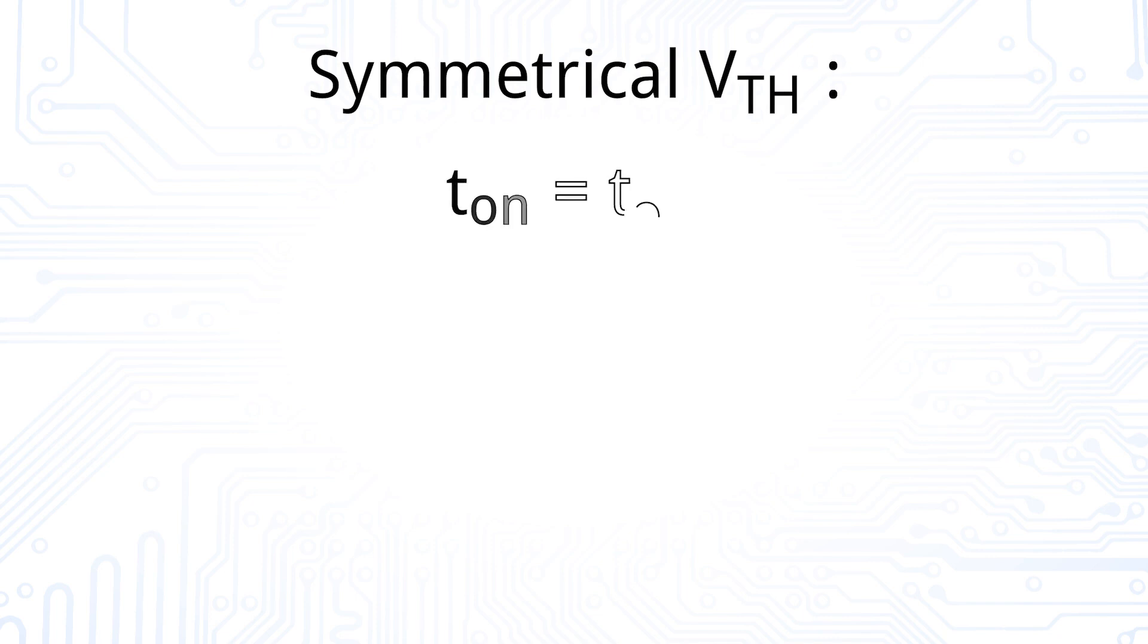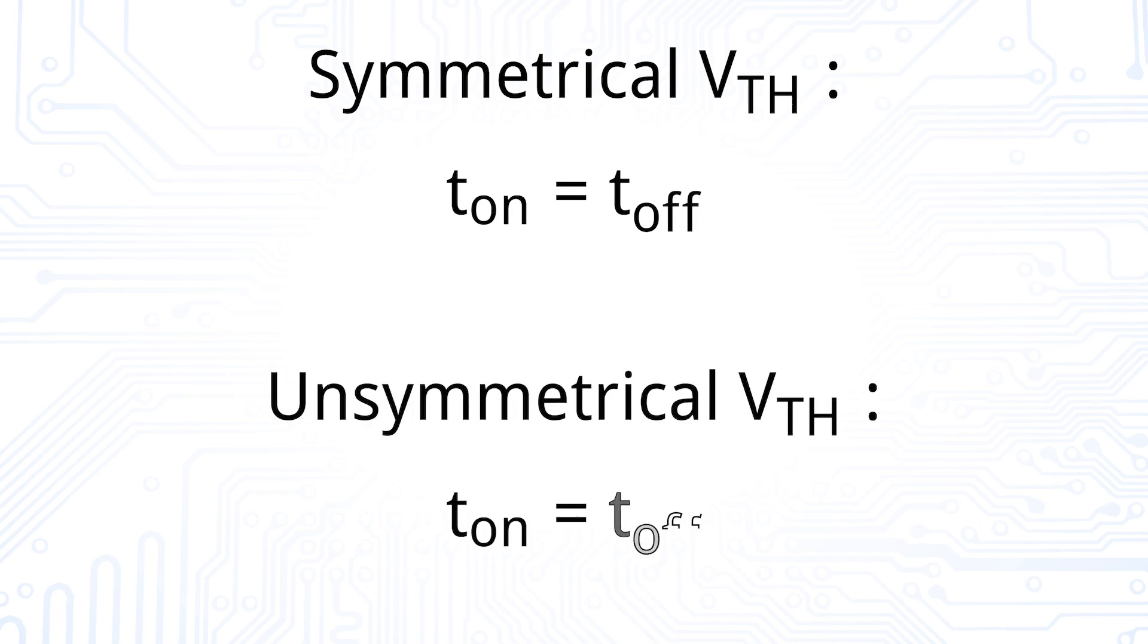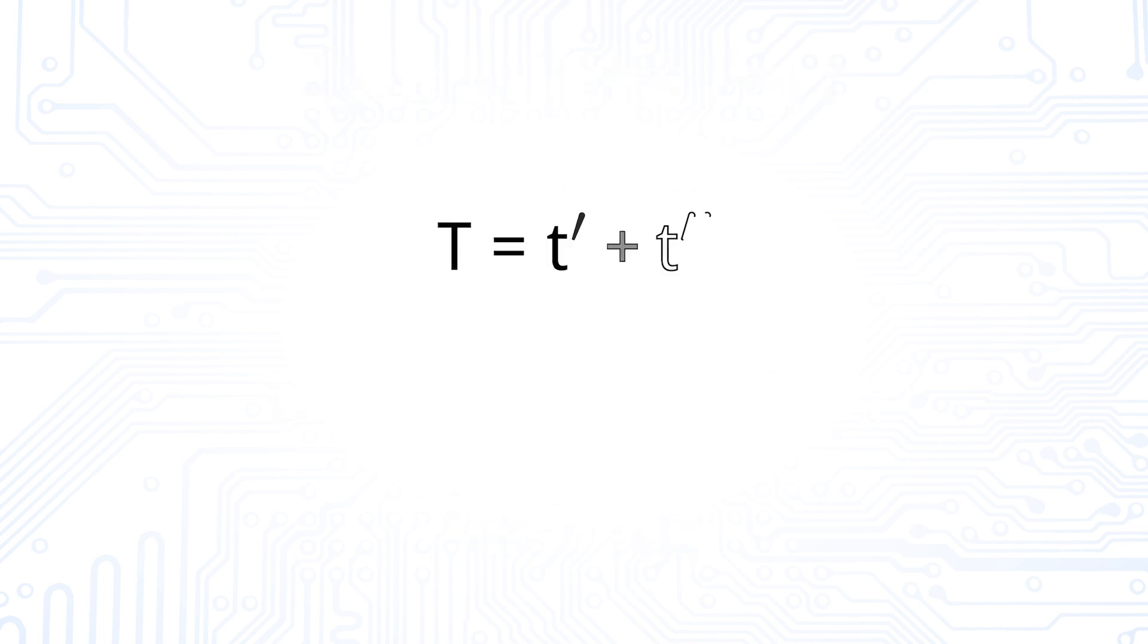If the threshold voltages are symmetrical with regard to the upper and lower supply voltages, the on and off times are the same. If the threshold voltages are not symmetrical, then also the on and off times are not the same. The period is simply the sum of on and off times, and the frequency is the inverse of the period.